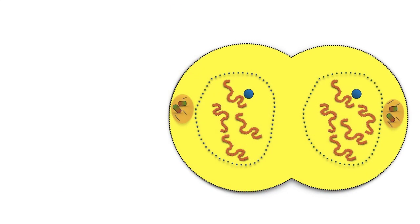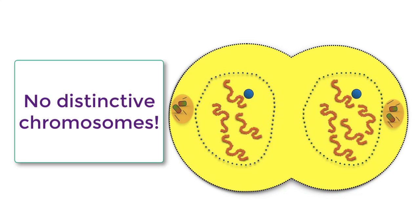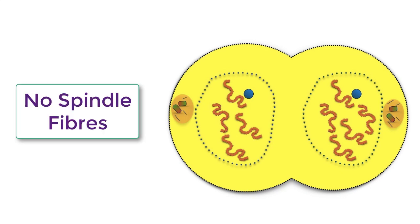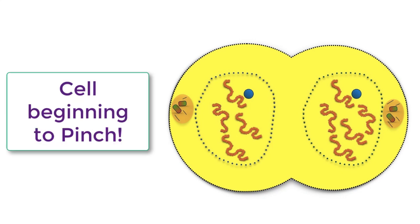Looking at the telophase diagram: first, there are no distinctive chromosomes visible — they are no longer condensed. Second, you see the appearance of two new nuclear membranes. Third, there is the disappearance or absence of spindle fibers. And finally, you can notice that the cytoplasm is beginning to pinch — the cell is preparing to divide, which is cytokinesis.